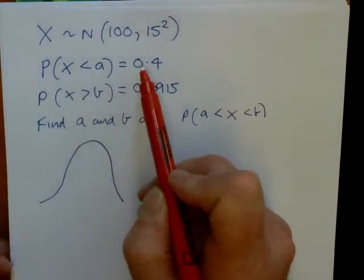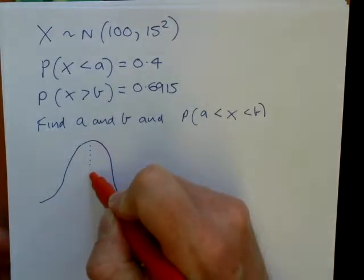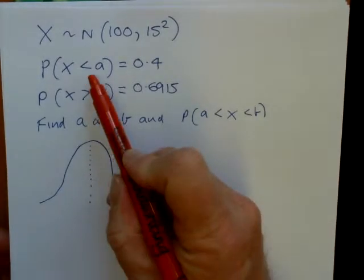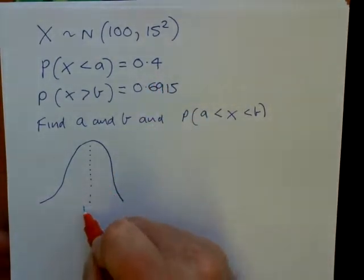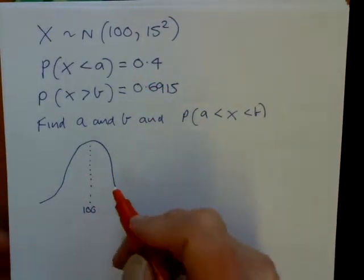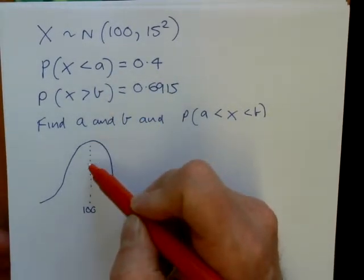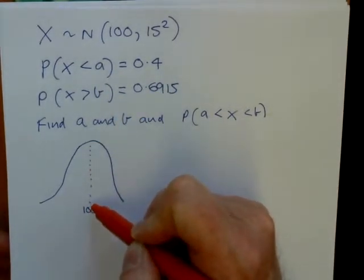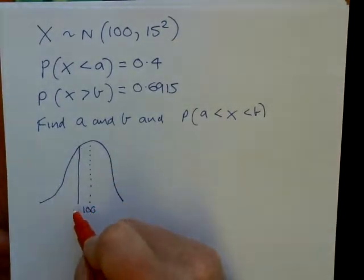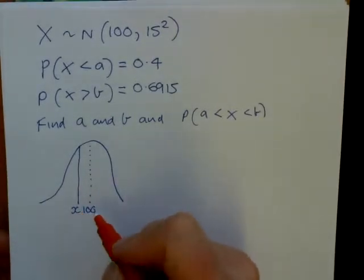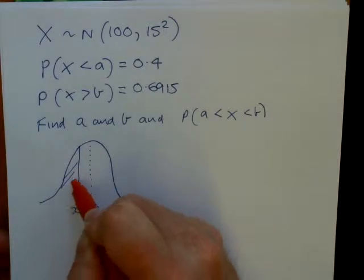I'll take the first piece of information. The value that we're smaller than, a, has probability 0.4. So if I put my value, then this value is going to be less than 100, because probability less than 100 at the mean is a half. So we've got the value there, it's a value that's less than 100, and being to the left of it is 0.4.